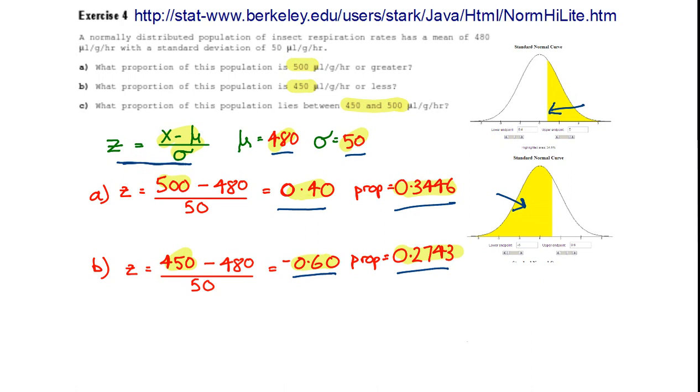We've got 34.5% greater than 500, 27.4% below. The proportion that lies between those two values is that proportion there.